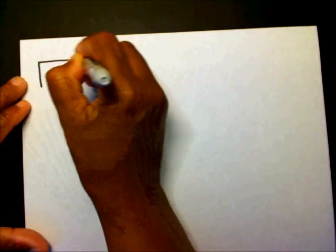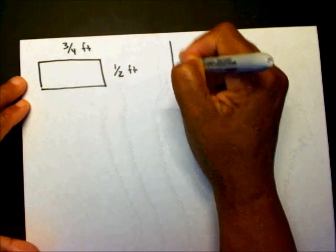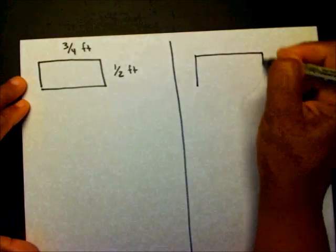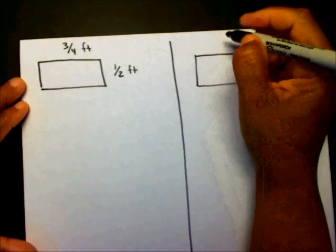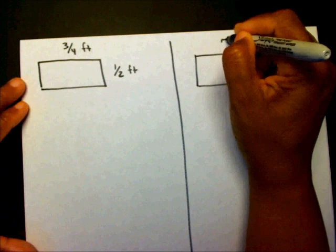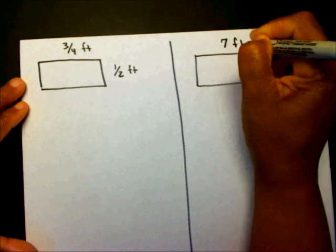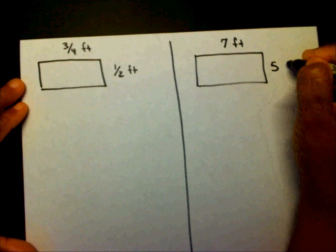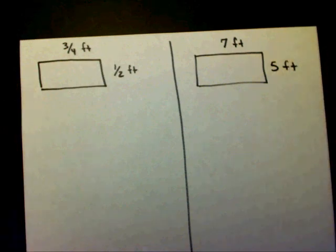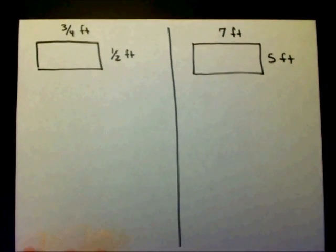Okay, let me let you work two. This is 1 half and this is 3 fourths feet. And then over here, let's do 7 feet and 5 feet. If you'll please find the area for those two triangles, please place the video on pause.